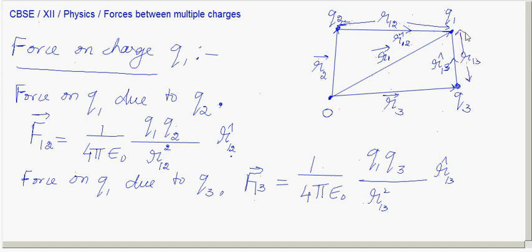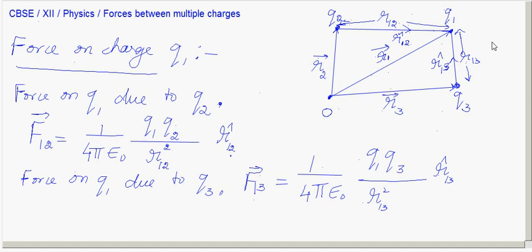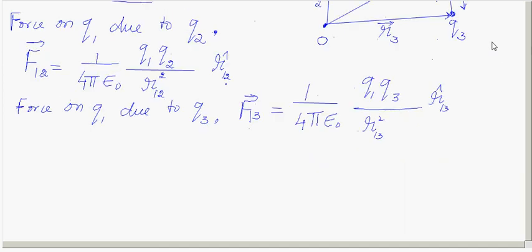By superposition, the total force on Q1 is the vector sum of F12 and F13. We can write the total force F1 on Q1 due to charges Q2 and Q3 as F1 = F12 + F13.